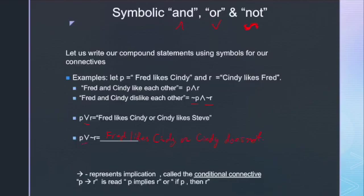A statement form that has a truth value of true regardless of the truth values of the individual statement variables it contains is called a tautology — it's always true. A statement form that has a truth value of false regardless of the individual statement variables it contains is called a contradiction — it's always false.